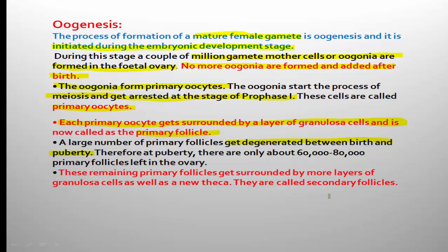The primary follicle is the primary oocyte surrounded by a layer of granulosa cells. These primary follicles undergo proliferation — structural changes — whereby the primary follicle is converted into secondary follicle, secondary into tertiary follicle, and tertiary into mature graafian follicle.